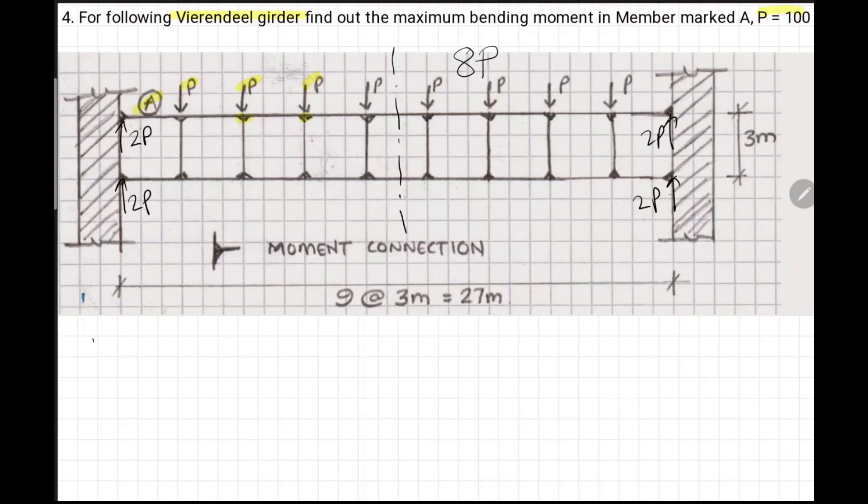There is a method we call portal method of analysis. In portal method of analysis, if we have a fixed frame, we consider point of contraflexure as mid-height. So if this was P, point of contraflexure, P by 2, P by 2, and if height is H, this will be H by 2.